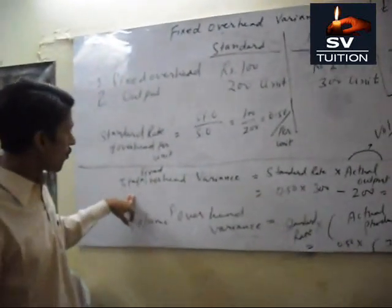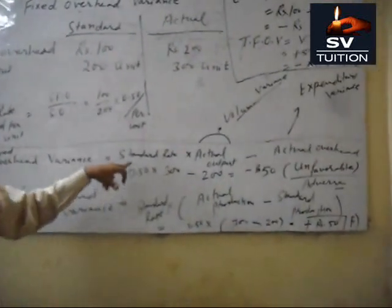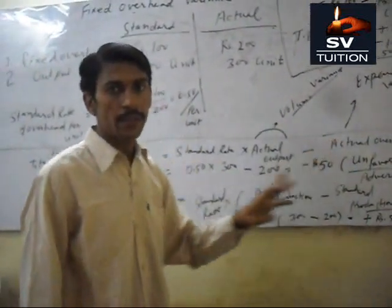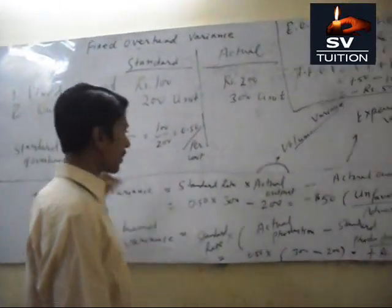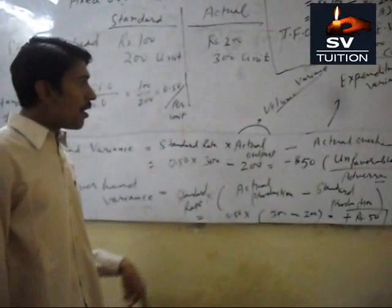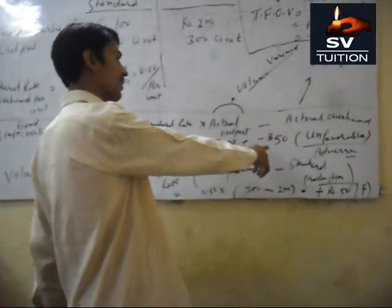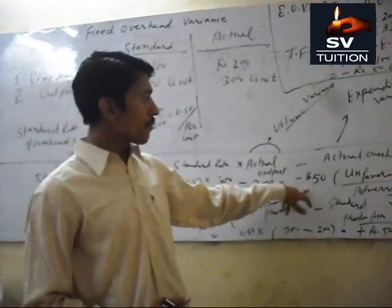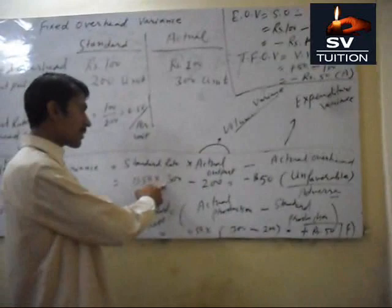Now we have to calculate the total fixed overhead variance using the formula: standard rate multiplied by actual output, minus actual overhead. Standard rate is 50 paisa, actual production is 300 units, minus actual overhead of 200. The result is negative 50 paisa, which is unfavorable.